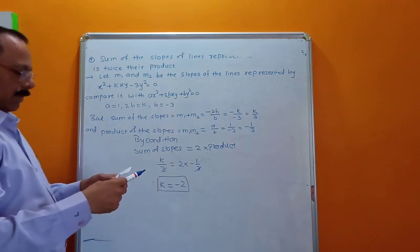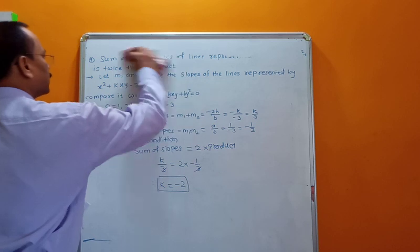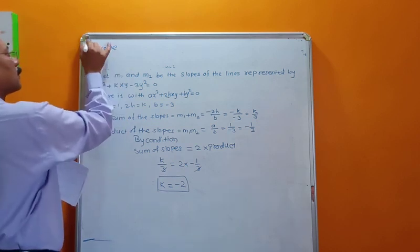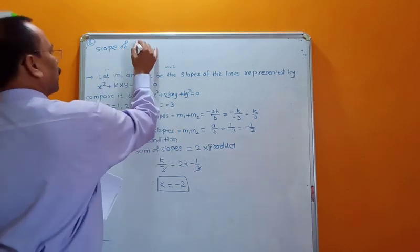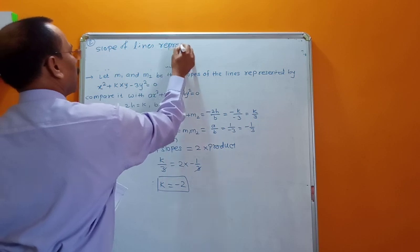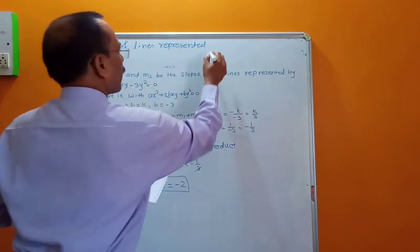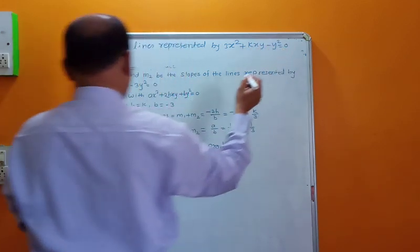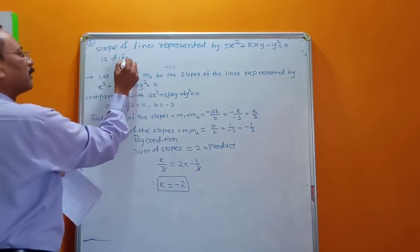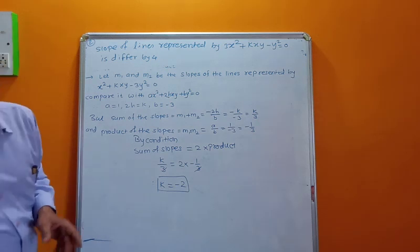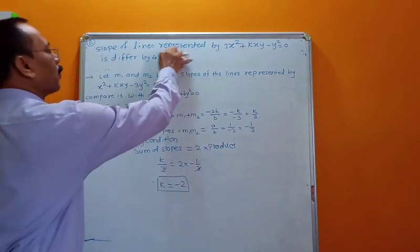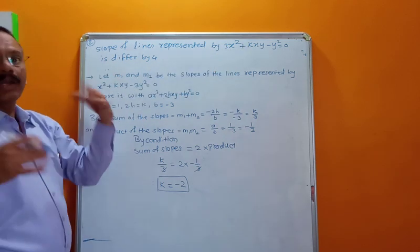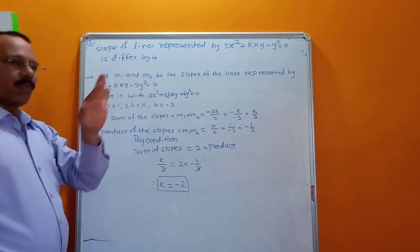Now the second example: the slope of the lines represented by 3x² + kxy − y² = 0 differs by 4. Differs by 4 means the difference between the slopes of the two lines is 4, so m1 − m2 = 4.